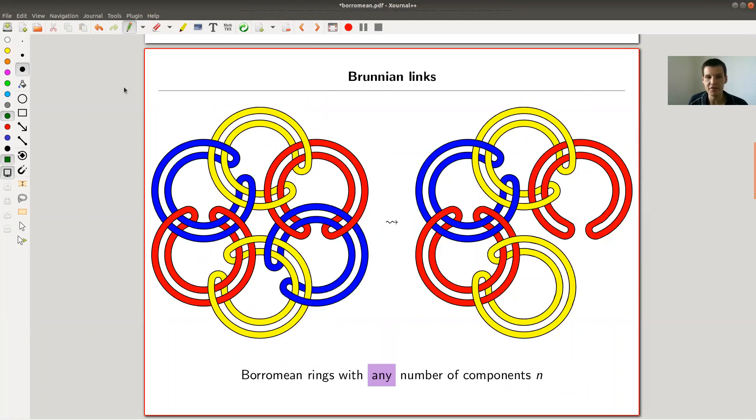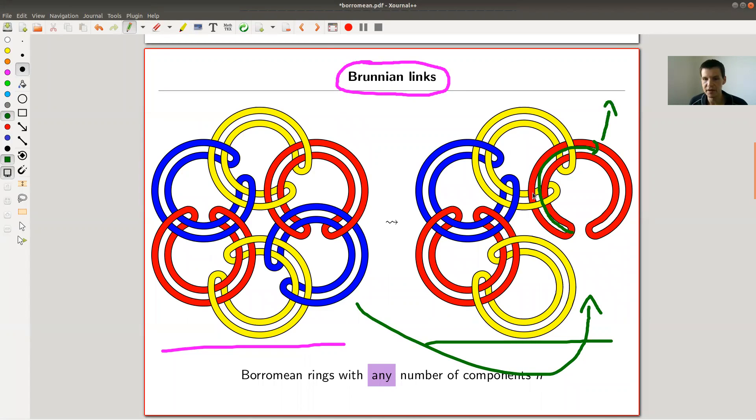The generalization of this idea are usually called Borromean rings or Brunian links after a mathematician whose name was Brun. The idea is the same. You can construct those with any number of components. Here's an illustration with six components. This is the link or the ring itself, and here I removed the blue one, and now you can just unknot it. This picture basically is a proof that those Borromean ring type things exist for any number of components.